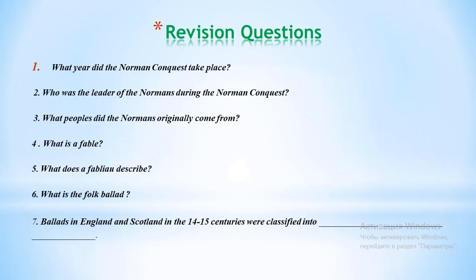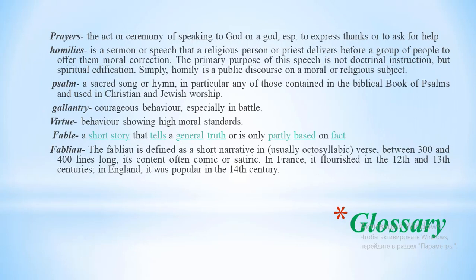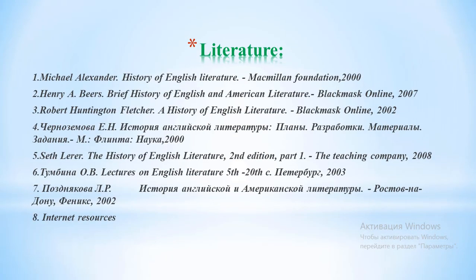This is the end of the lecture. For revision, consider the following questions: What year did the Norman Conquest take place? Who was the leader of the Normans during the Norman Conquest? What peoples did the Normans originally come from? What is the fable? What does the fablio describe? What is the folk ballad? Ballads in England and Scotland in the 14th and 15th centuries were classified into which groups? You are also given a list of terms from the lecture and references for further study.